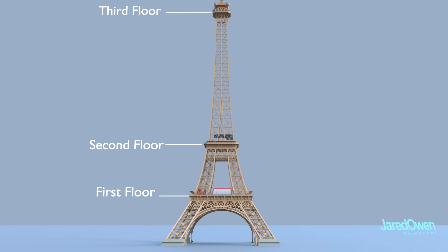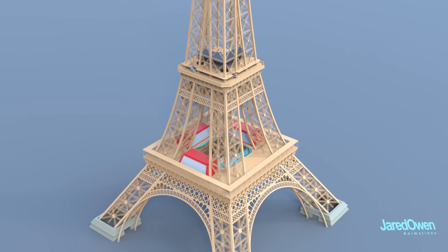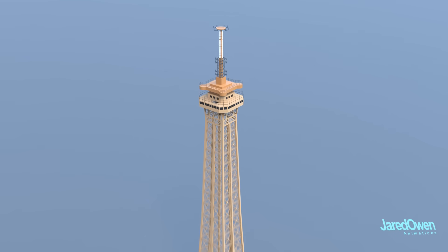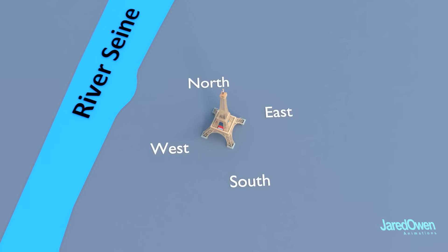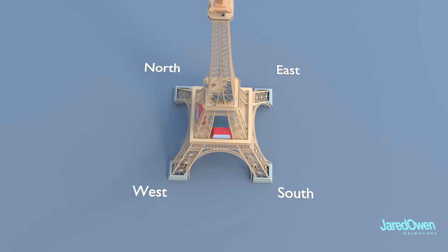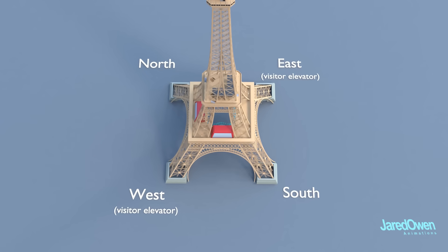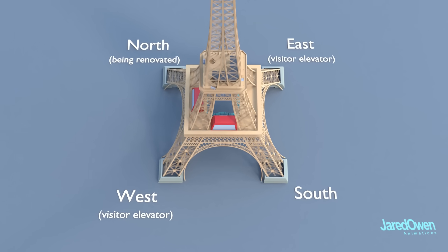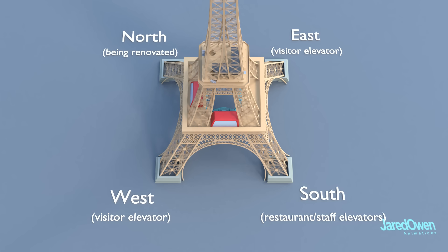So how do you get to these three floors? The first and second floors you can reach by elevator or stairs. The third floor is only accessible by elevator. The River Seine is along here, and this is north, east, south, and west. There are elevators in each of the four pillars. The east and west pillars have visitor elevators. The north pillar also contains a visitor elevator, but it's currently being renovated. The south pillar contains two elevators — one for the Jules Verne Restaurant and one freight elevator for the tower staff.